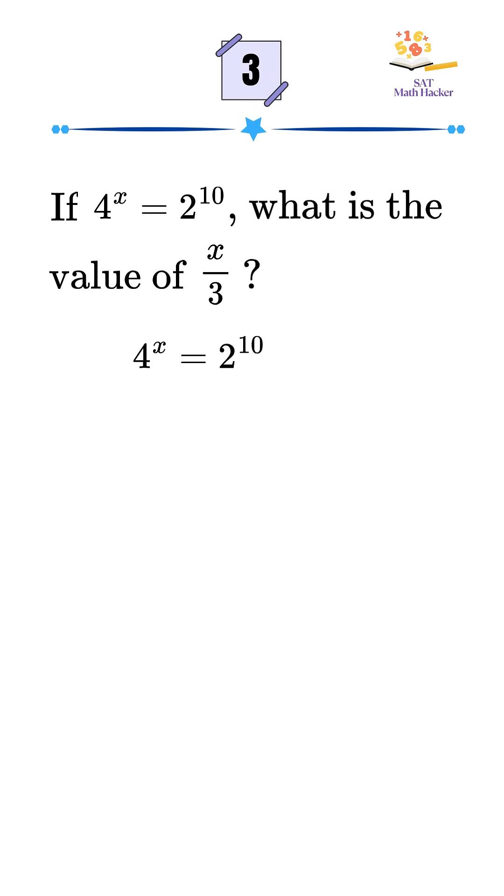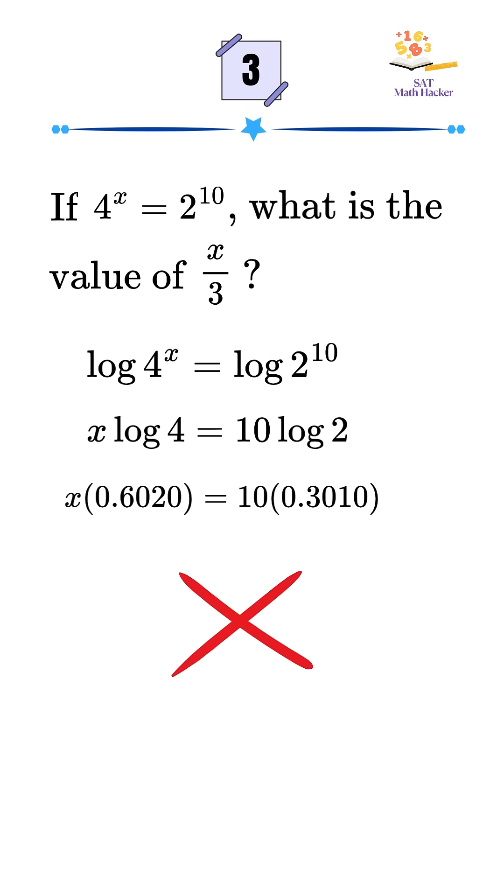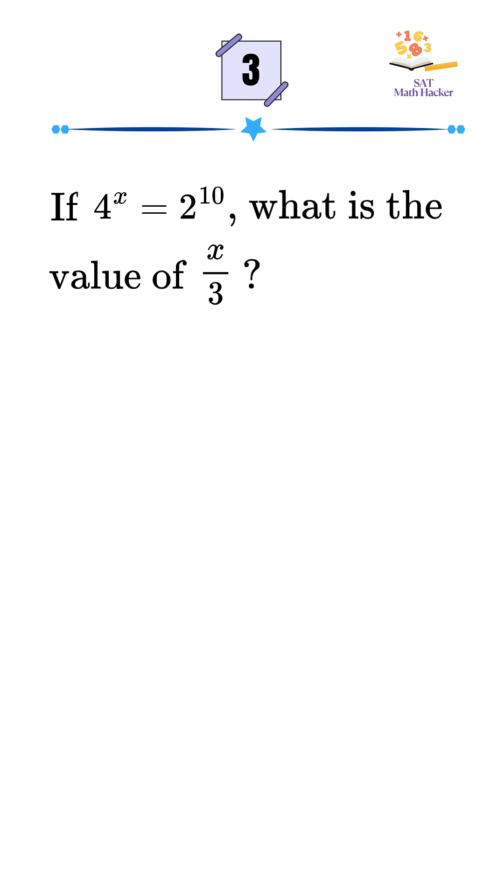Some students panic and take logarithms on both sides. They do log of 4 to the x and log of 2 to the 10, then try change of base and end up with a messy decimal. Here's how to solve it correctly. Let's do it.